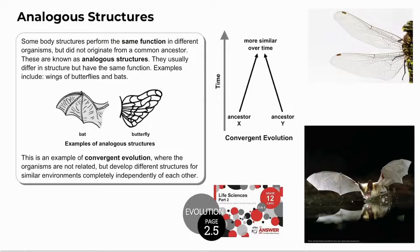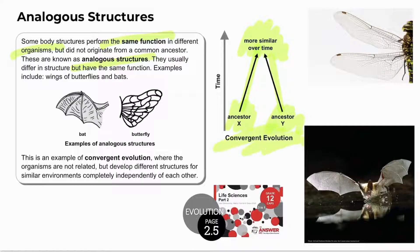Analogous structures are different structures with the same function in different organisms. These organisms originated independently from different evolutionary origins with no common ancestor, but descendants became more similar over time due to similar environments — this is called convergent evolution. For example, bat and insect wings are both adapted for flying in air but are different structures. Fins in fish and flippers in dolphins are both adapted for swimming in water but are different structures from entirely unrelated species.